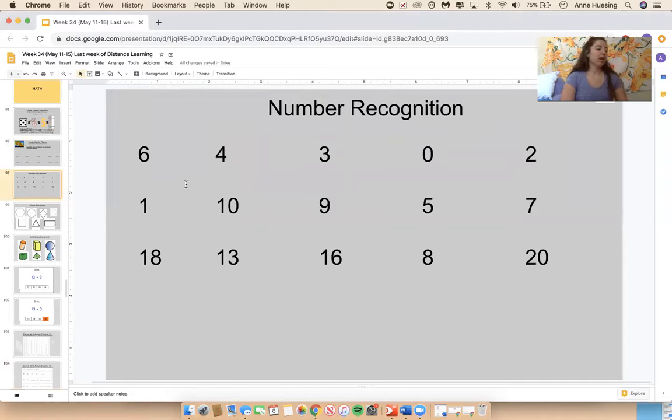All right, today we have number recognition. Let's go ahead and get started. Starting with this number, go. Five, six, four, three, zero, two, one, 10, nine, five, seven, 18. What was that one? Eight, 10, good, 13, 13, 16, eight, 20. Very, very good.